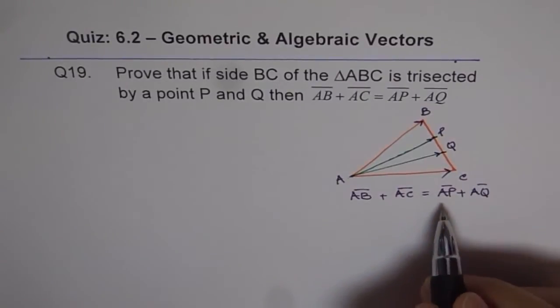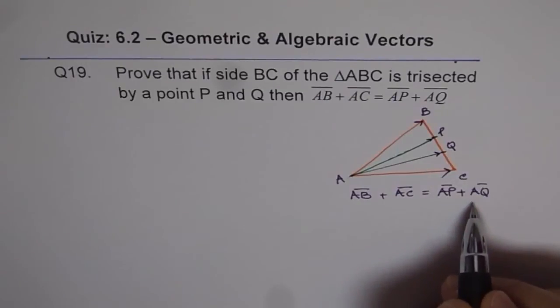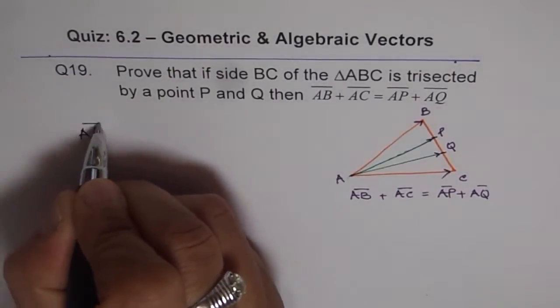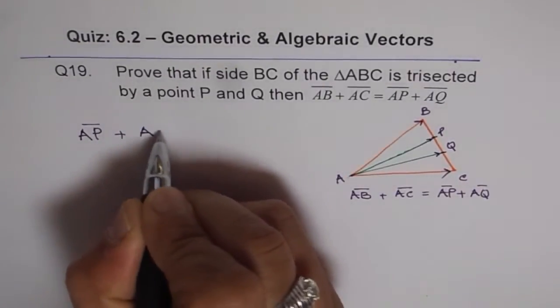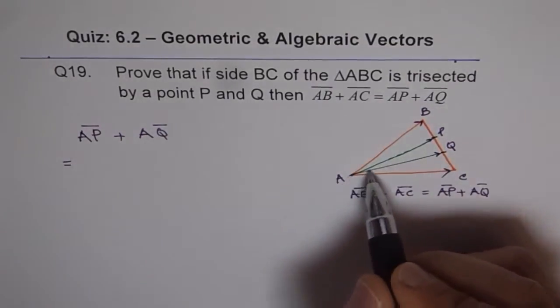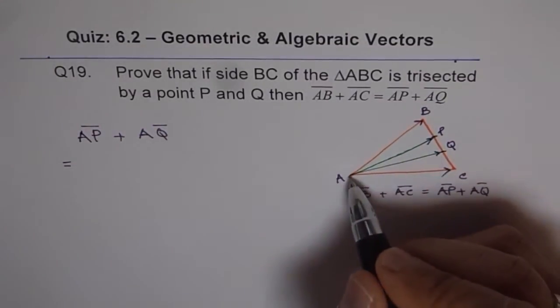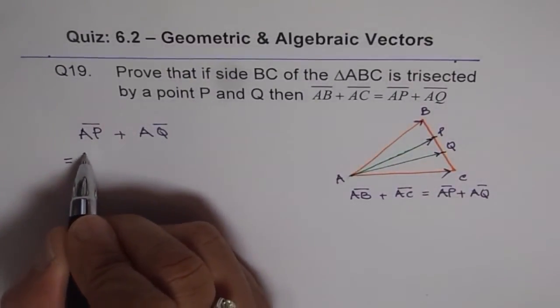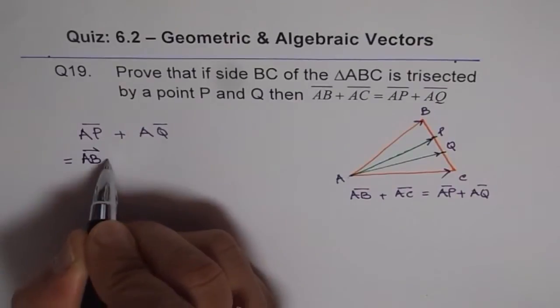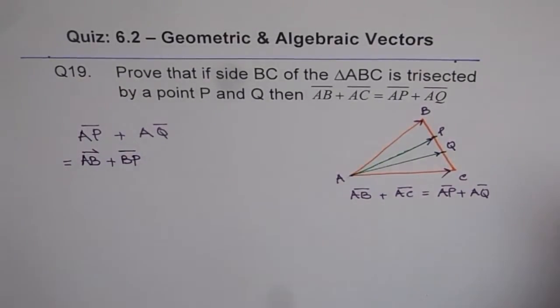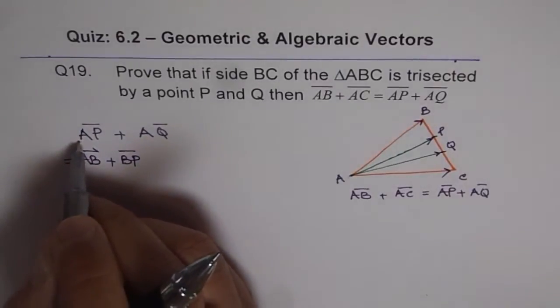Now what we can do is we can write what AP + AQ is and then see if we can get the result. So let's start with the right side. So let's start with the right side and say AP + AQ is equal to what? So AP can be written as AB + BP, right? So let me write this AP as AB + BP. So this is how I am expanding AP.